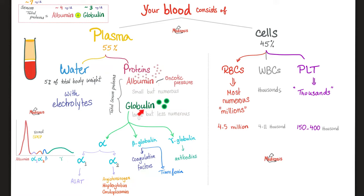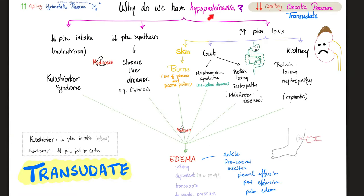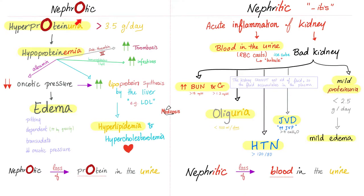We talked about microglobulinuria in the video on beta-2 microglobulin in this lab's playlist. Today we're talking about microalbumin in the urine. The main function of albumin is to maintain your oncotic pressure. Without albumin, you can develop edema — pitting edema, dependent, made of transudate (not exudate), caused by decreased oncotic pressure. The four features of nephrotic syndrome are: high protein in the urine, low protein in the blood, edema, and hyperlipidemia. This is overt proteinuria — not just microalbuminuria, but way too much protein in the urine.